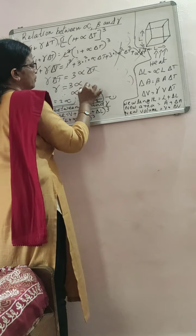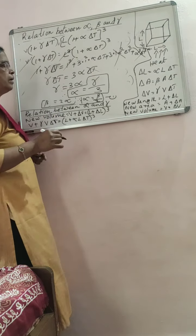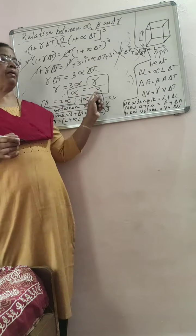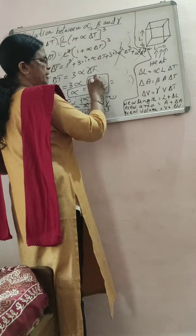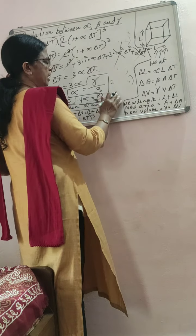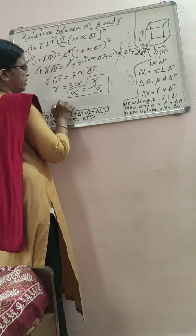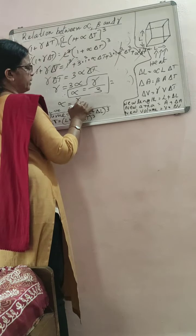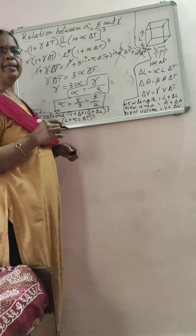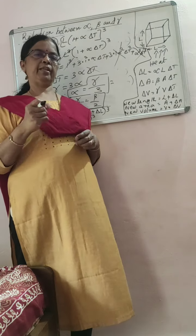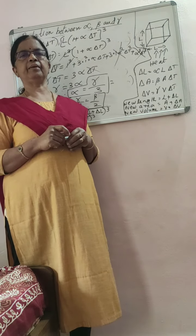Therefore, alpha equals gamma by 3. That is the relation. And we already got alpha equals beta by 2. So we can write the complete relation: alpha equals gamma by 3, which also equals beta by 2. This is the relation connecting alpha, beta, and gamma. This is a very important question — you have to write it and study.